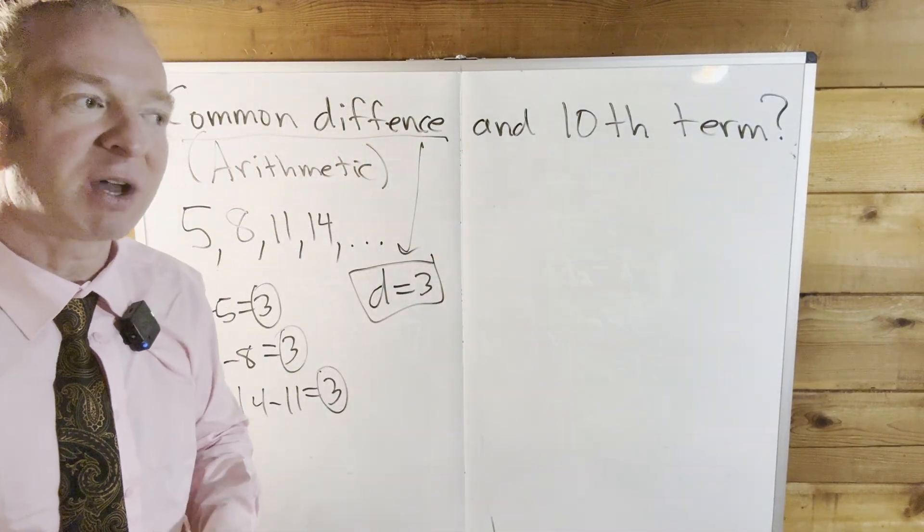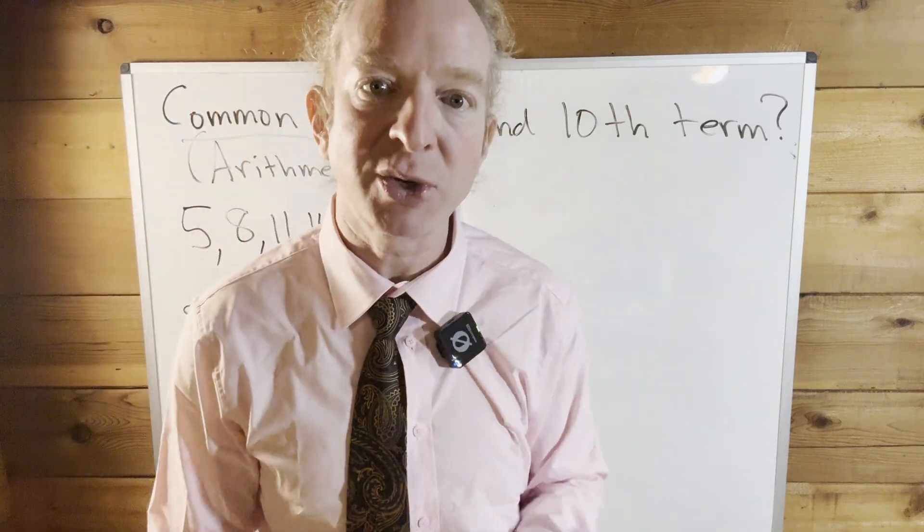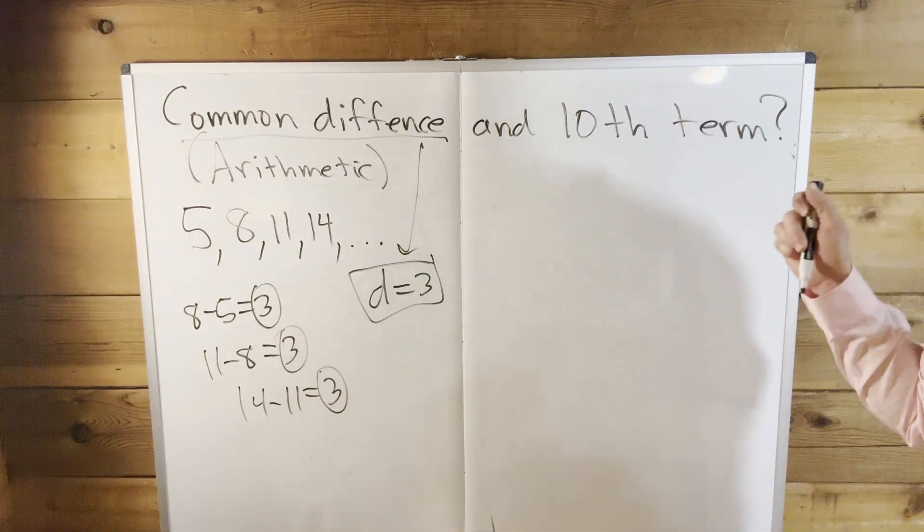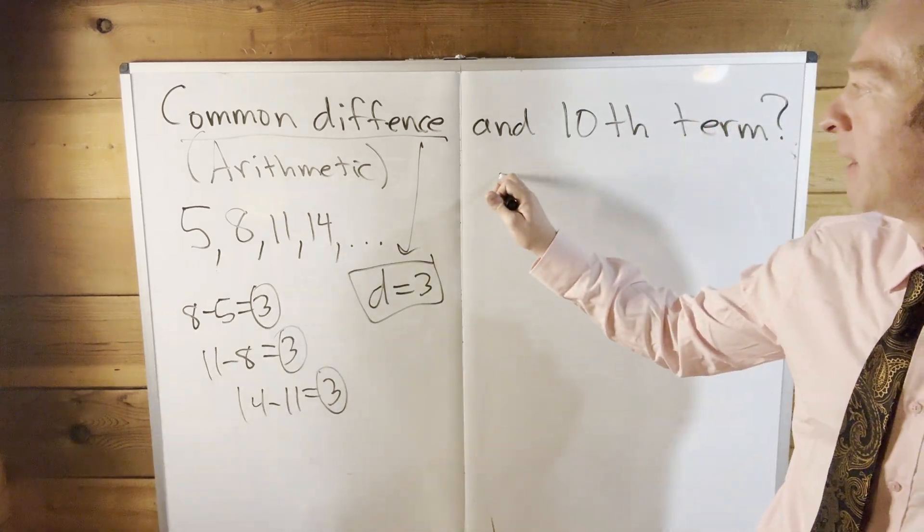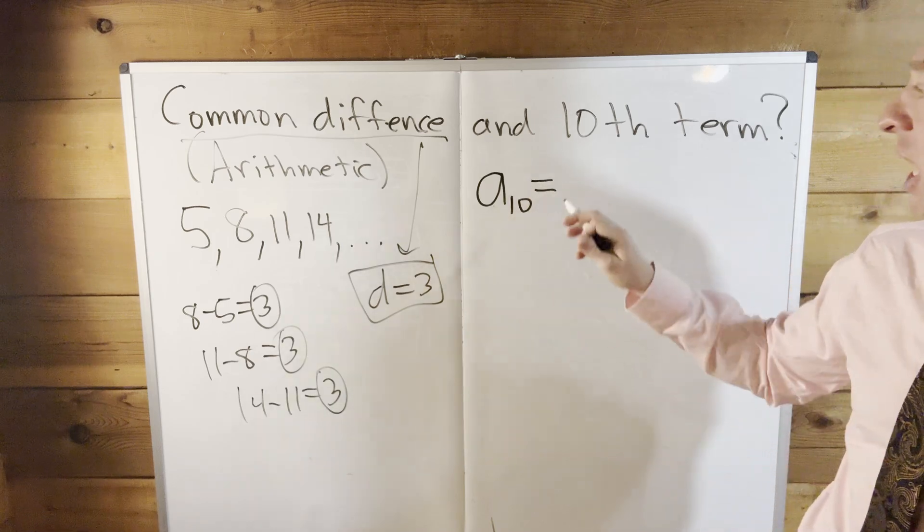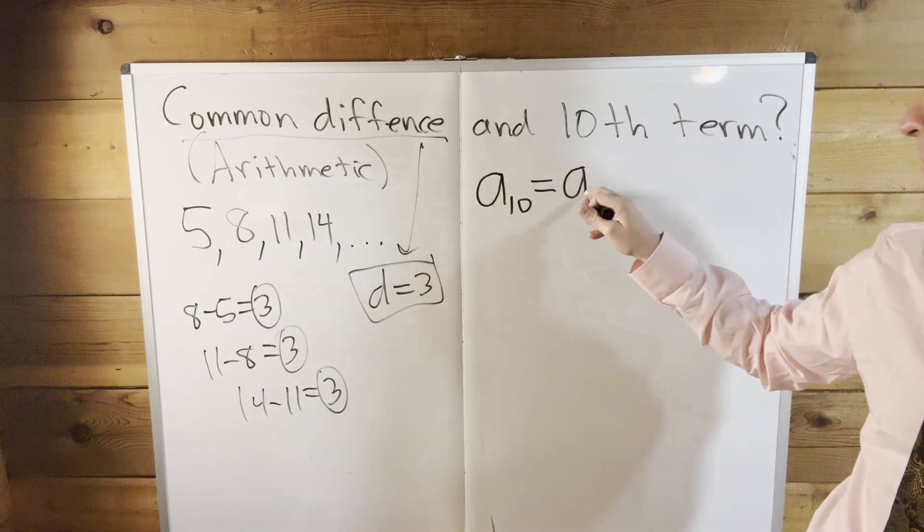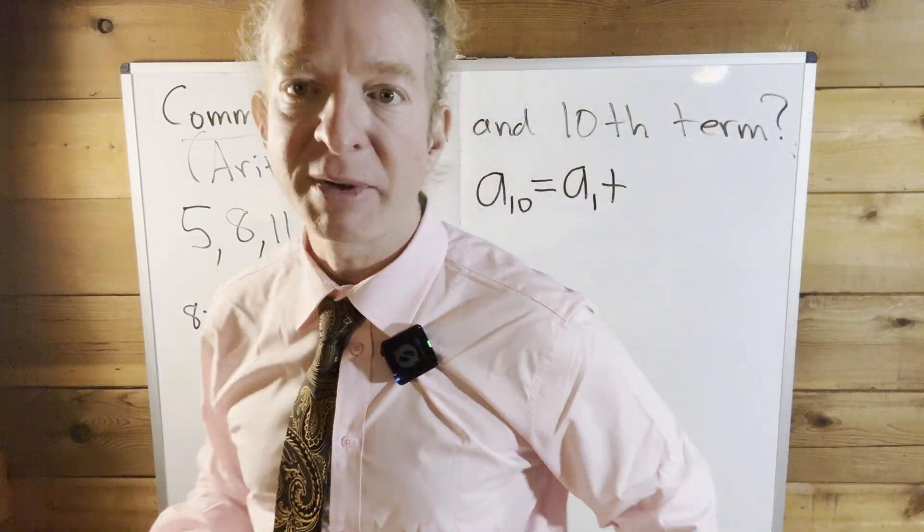And the strategy that we're going to employ in this example carries over to geometric sequences as well. So to find the 10th term, here's how you do it. To find the 10th term, well, if we're going to get there from the first term, how many times should we add a common difference?